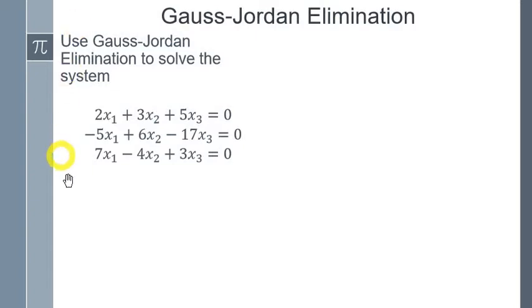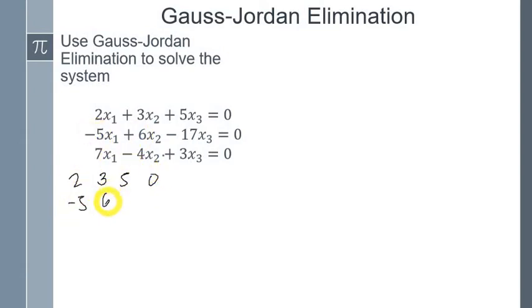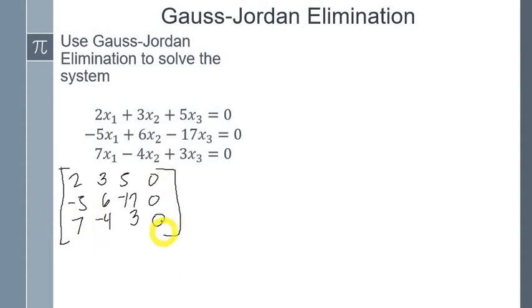Let's first write this as an augmented matrix. We'll have 2, 3, 5, and 0. Then negative 5, 6, negative 17, and 0. Then 7, negative 4, 3, and 0.